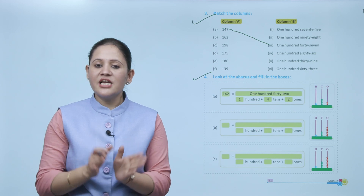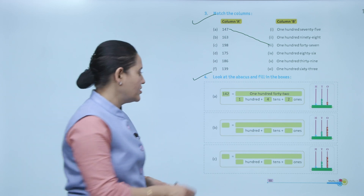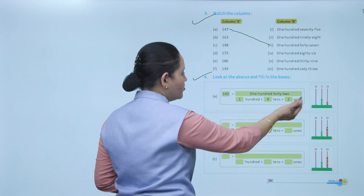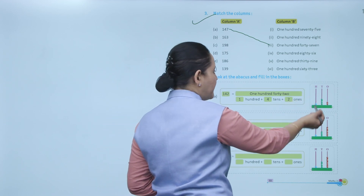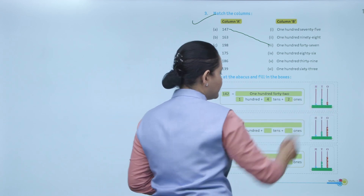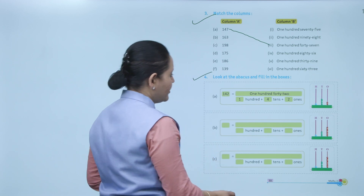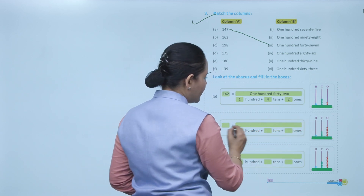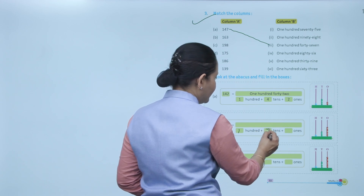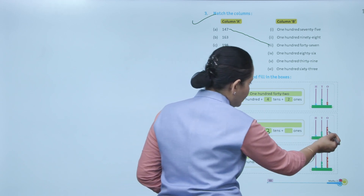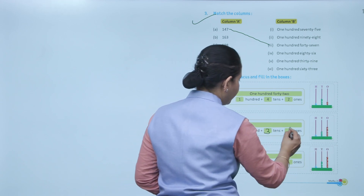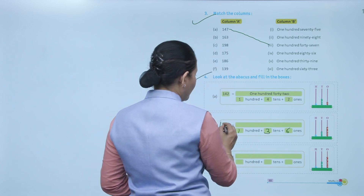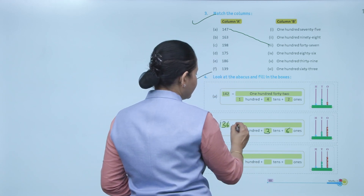Next: look at the abacus and fill the boxes. Number is 142 — hundreds: one bead, tens: four beads, ones: two beads. Like here, hundreds: one bead, so 100; then three beads at tens, that is three tens; and then six at ones.